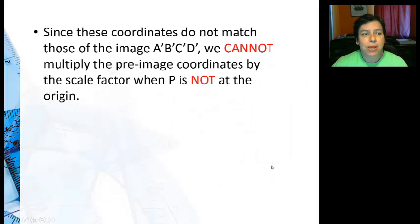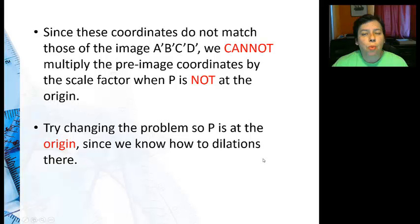And the reason is because the point of dilation is not at the origin. I can't use this rule anymore of just multiplying the scale factor by the coordinates. So what could we do? Well, since we cannot multiply the pre-image coordinates by the scale factor when it's not at the origin, why don't we change the problem so P is at the origin?